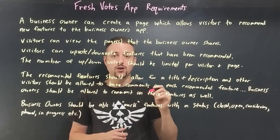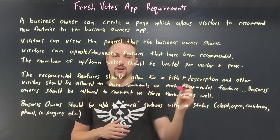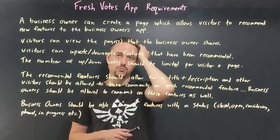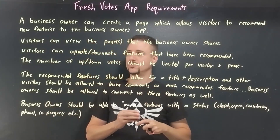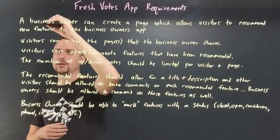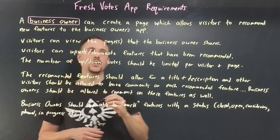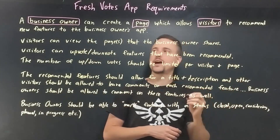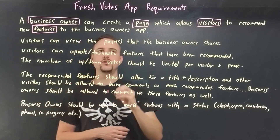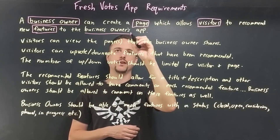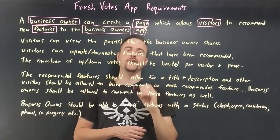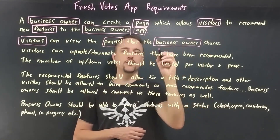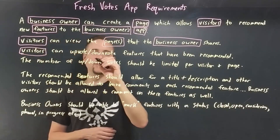So what do we do? First we read it to understand it, and then we go through it again and outline all the nouns. Nouns are person, place, or thing inside the text — not adjectives, not verbs. People get confused and try to add verbs — no, just the nouns. So 'business owner' is a noun, 'page' is a person, place, or thing, 'visitors' are people — person, place, or thing — and 'feature' is obviously a thing. Visitors can view the pages that the business owner shares — you get the idea, we're going to go through and highlight all the nouns.